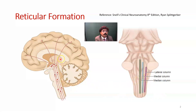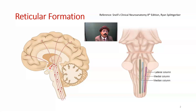They are connected to the entire nervous system — receiving input from the cerebral cortex and sending output to the cerebral cortex. They are also connected to the thalamus and the hypothalamus, and it regulates a lot of body functions.